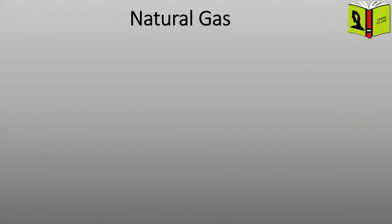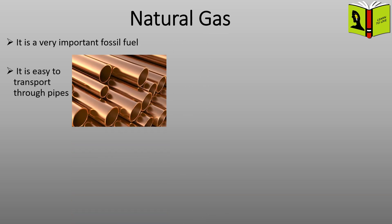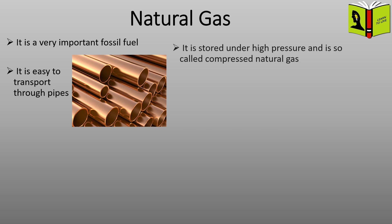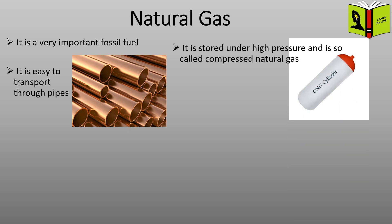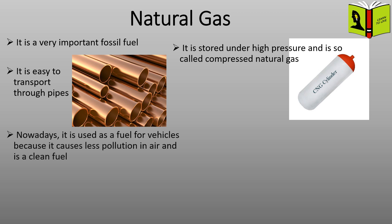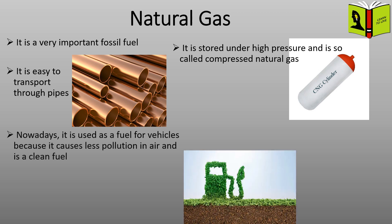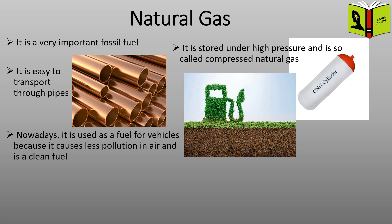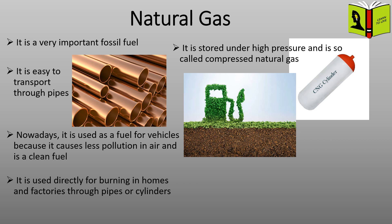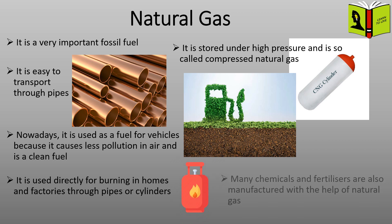Natural gas: it is a very important fossil fuel. It is easy to transport through pipes. It is stored under high pressure and is called compressed natural gas (CNG). Nowadays it is used as a fuel for vehicles because it causes less air pollution and is a clean fuel. It is used directly for burning in homes and factories through pipes or cylinders. Many chemicals and fertilizers are also manufactured with the help of natural gas.